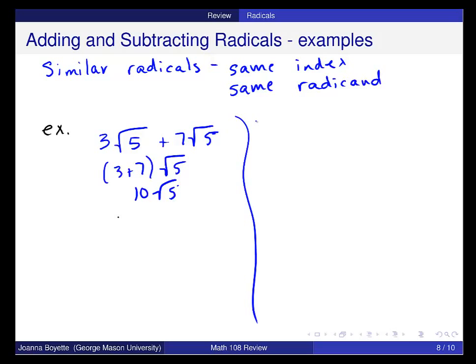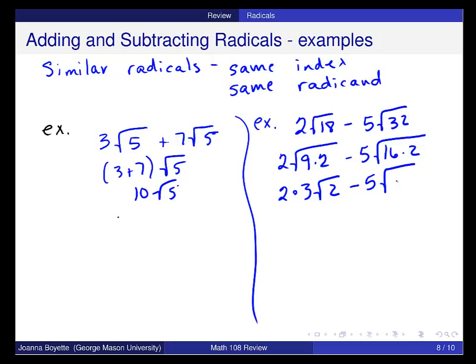Sometimes you have to simplify first in order to add. So 2 times the square root of 18 minus 5 square roots of 32. Again, please try this one on your own. You can come back when you've done that. I'm going to simplify this. And I get 2 times the square root of 9, which is 3 times the square root of 2, minus 5 times the square root of...